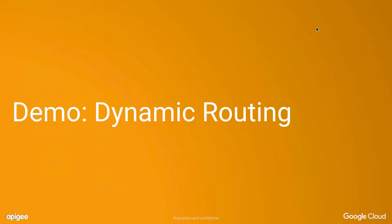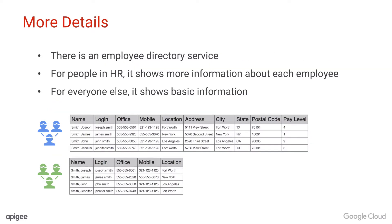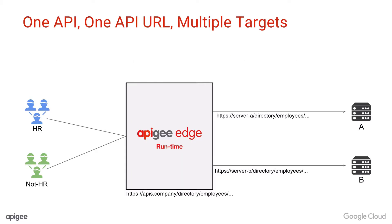Let's talk about a common request I hear from customers: dynamic routing. Here's the problem we're going to solve today. We've got different API consumers who should be routed to different backend services based on their relationship with the company — server A and server B for two different groups. There's an employee directory service: for people in HR, it shows more information about each employee; for everyone else, it shows basic information. The goal is one API, one URL, and multiple targets on the backend systems. Everybody connects to one URL in Apigee Edge, which will manage the flow of traffic, put rate limiting in there, and automatically route them to the right location based on who they are.